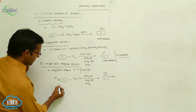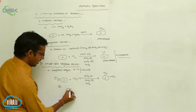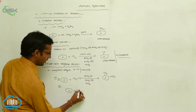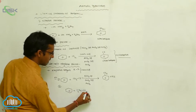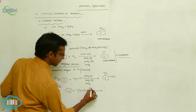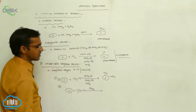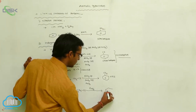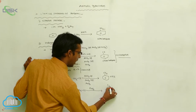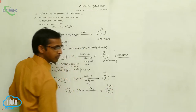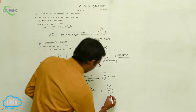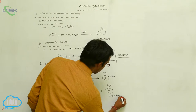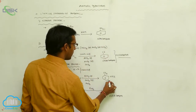Example 2: benzene is reacted with ethyl chloride (C2H5Cl) in the presence of Lewis acid FeCl3. The ethyl group is substituted on benzene, giving ethylbenzene.